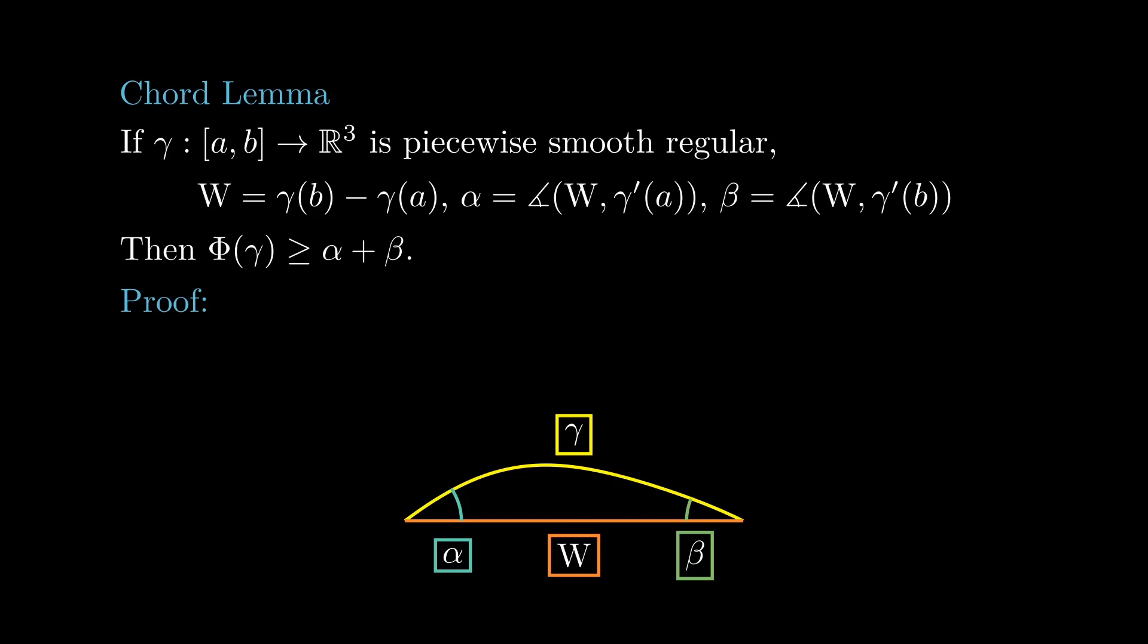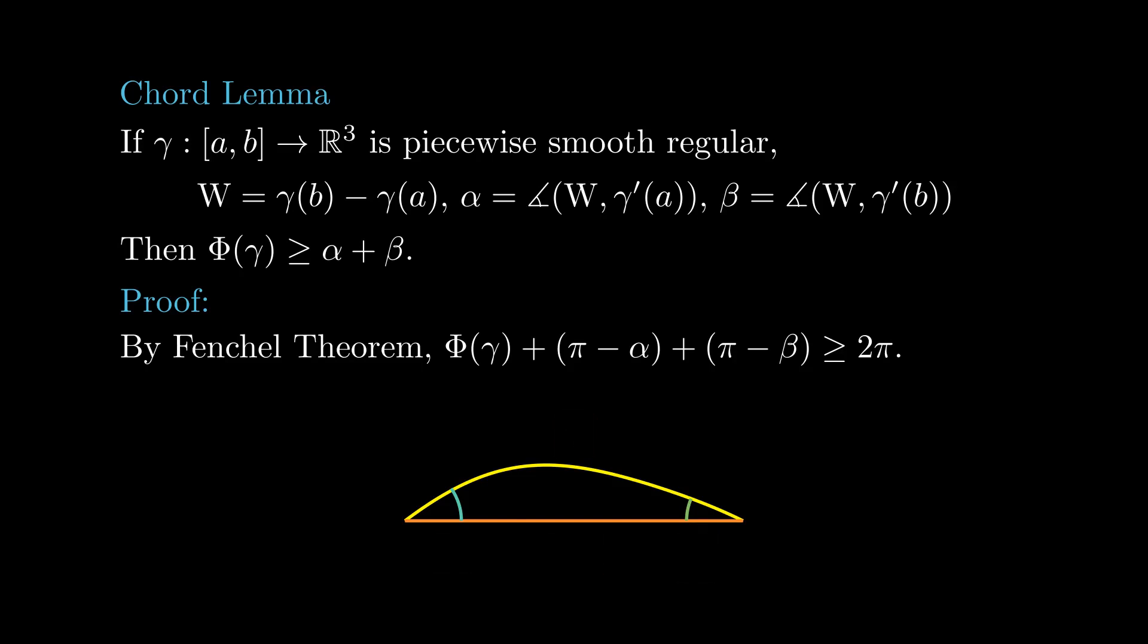To see this, all we need to do is apply Fenchel theorem to the curve obtained by concatenating gamma with the line that goes from gamma b to gamma a. When we analyze the trajectory of the tangent indicatrix of this closed curve, we see that it first follows the trajectory of the tangent indicatrix of gamma,